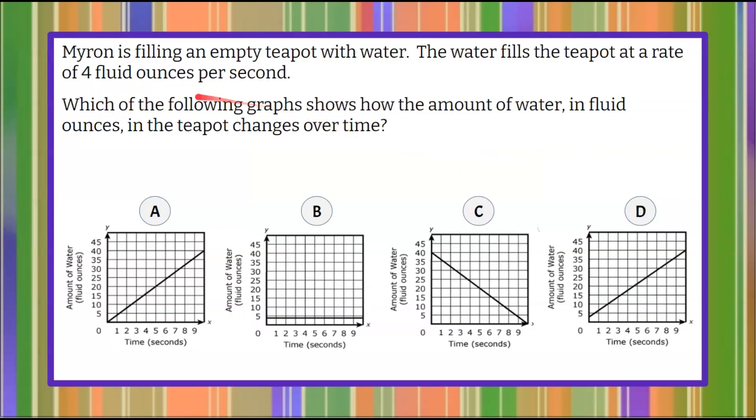Here's our question today. Myron is filling an empty teapot with water. The water fills the teapot at a rate of four fluid ounces per second. We're asked which of the following graphs shows how the amount of water in fluid ounces in the teapot changes over time, and we're presented with four different graphs.